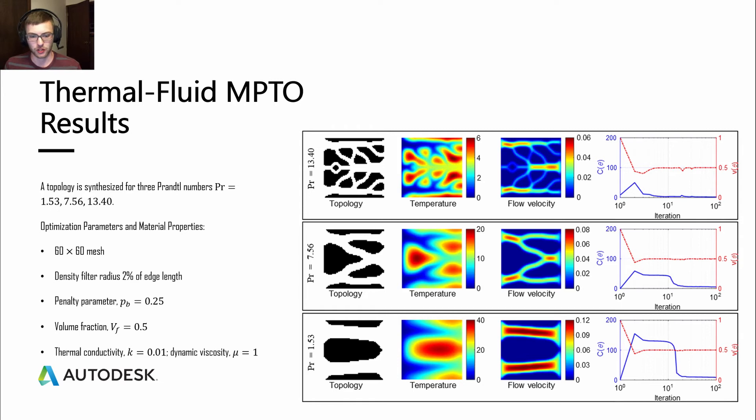The first thing that you may notice is at higher Prandtl numbers, we have much more complex, intricate, and narrower flow channels. And then as you come down to the lower Prandtl numbers, you have much wider flow channels. You can also see on the right-hand side here that our final convergence after 100 iterations is much lower with higher Prandtl numbers. This goes up as you decrease the Prandtl number. So we actually have more better performing designs with higher Prandtl numbers.